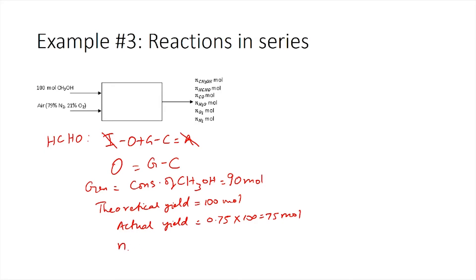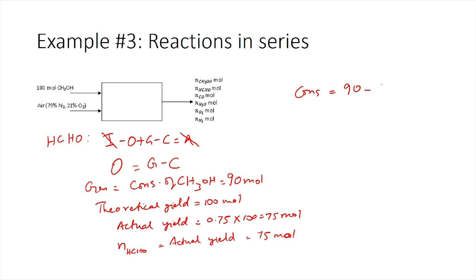Therefore, the output of formaldehyde, N_HCHO, is 75 moles. From here we can calculate the consumption term: consumption = generation – output = 90 – 75 = 15 moles. This tells us how much formaldehyde is consumed by the second reaction.